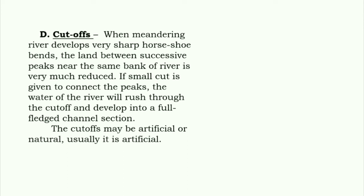The next method is the cut-off. When a meandering river develops very sharp horseshoe bends, the land between successive bends near the same bank is greatly reduced. If a small cut is made to connect the bends, the water of the river will rush through the cut-off and develop into a full-fledged channel section. Cut-offs may be artificial or natural, but usually they are artificial.